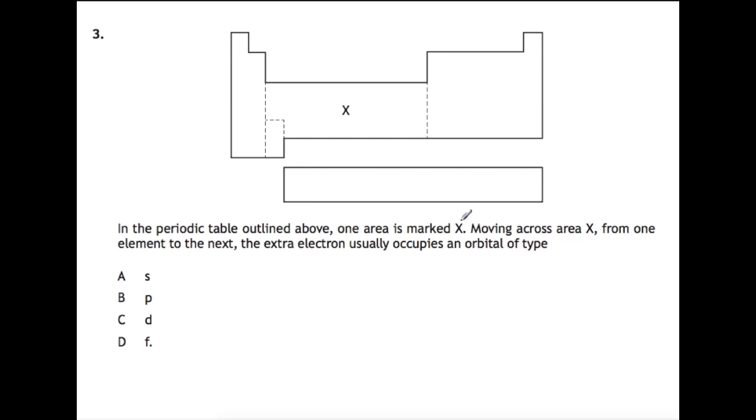Here we have the periodic table and it's asking you that in the area marked X, as you go across a period, the extra electron goes into what type of orbital. The periodic table is split into four sections based on the orbital being filled last. The first section is the first two columns—that's the S section. The P fills over here, the D is in this section, and the F block is down at the bottom. So our answer to this one is D. You could write out the electronic configuration of one of these elements and you would find it's always a D that you're putting the electrons into last.